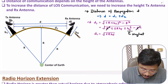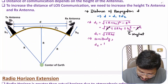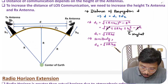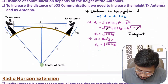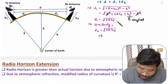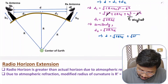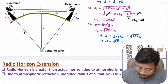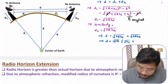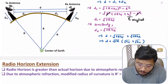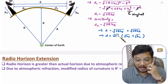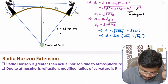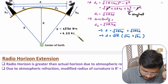Similarly, d2 equals the square root of 2Rhr, based on the height of the receiving antenna. The total distance d equals the square root of 2Rht plus the square root of 2Rhr, or taking square root of 2R common: square root of 2R times (square root of ht plus square root of hr). The radius of curvature R is 6370 kilometers, or 6.37 × 10⁶ meters.